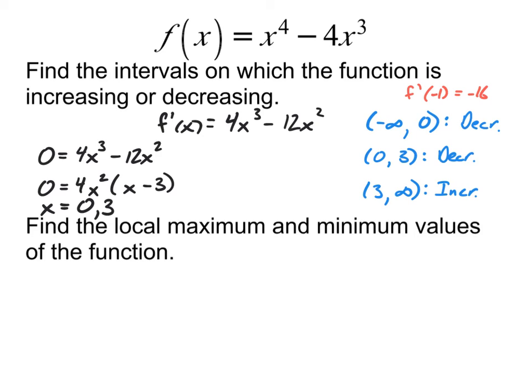All right, now we head into the second set of questions. Find the local maximum and minimum values. Remember that a maximum value occurs when it changes from increasing to decreasing. I'm looking at my intervals up here that I wrote earlier. I'm looking for a place where it changes from increasing to decreasing. I don't see any places where it changes from increasing to decreasing, which says that this does not have a local maximum.